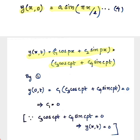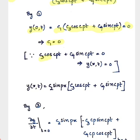Now applying the first condition, that is y(0,t) equal to zero: when we substitute x equal to zero in y(x,t), cos(0) will be 1 and sin(0) will be 0, so we are left with c1(c3 cos cpt + c4 sin cpt) equal to zero. We take c1 equal to zero, because if instead we set c3 cos cpt + c4 sin cpt equal to zero, the displacement y would be zero for all time t and all x, which is not possible. That is why we take c1 equal to zero.